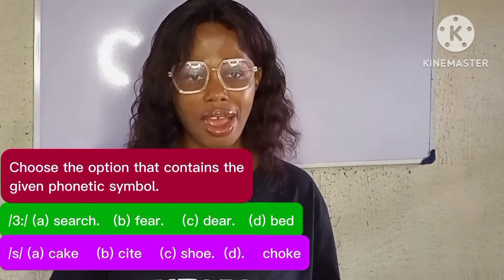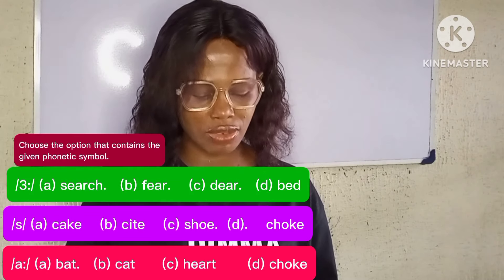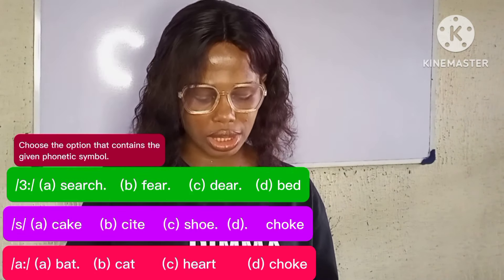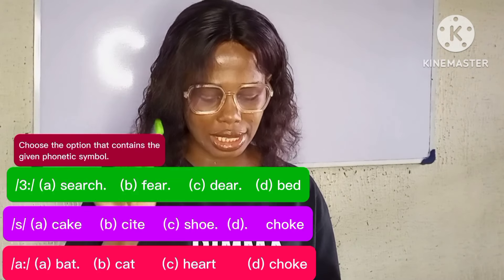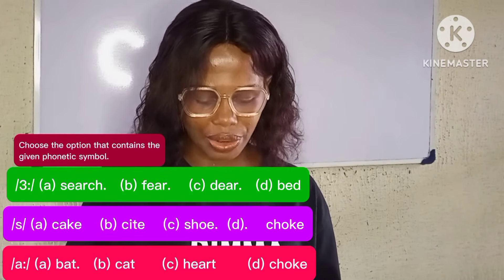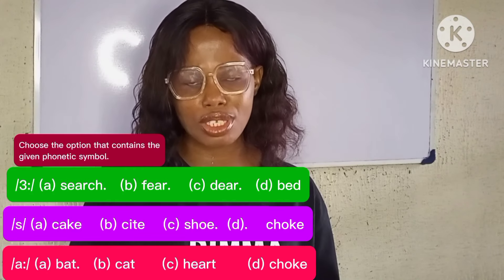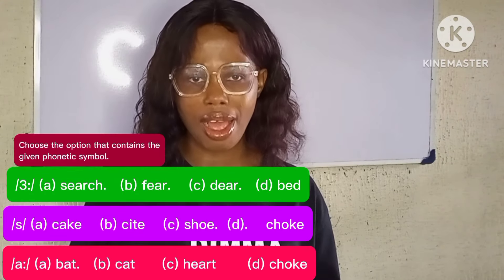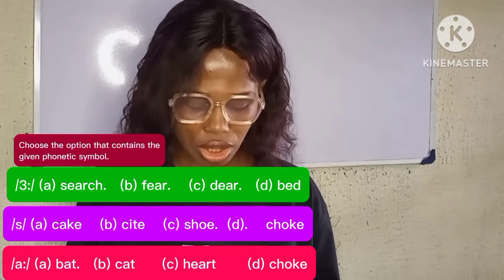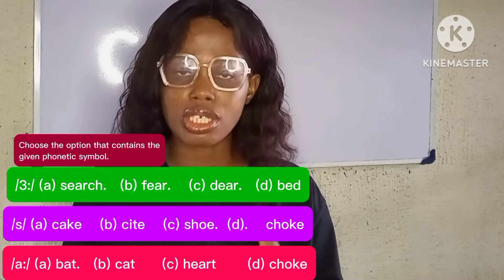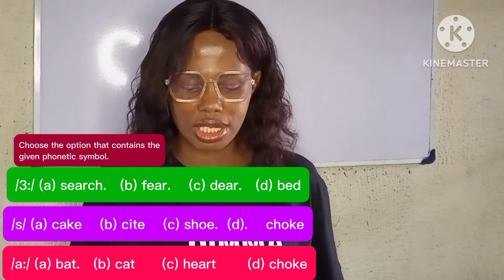The next question has the phonetic symbol 'ɑː' — a long vowel sound, indicated by the two dots. Option A is 'bat' — wrong, because the 'a' in bat contains the short 'æ' sound. Option B is 'cat' — same thing, also the short sound. Option C is the correct answer — it contains 'ear' between two consonants, and it's pronounced with a long 'ɑː' sound. Option D is 'choke' — obviously incorrect. So the correct answer is option C: 'heart.'